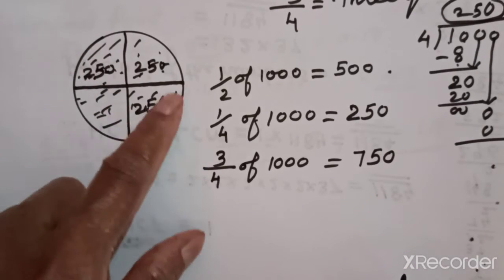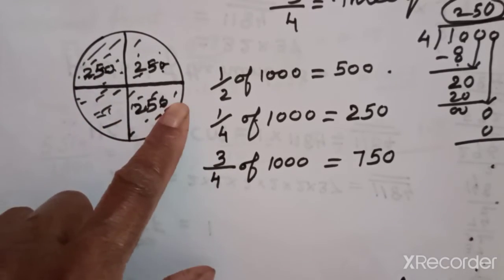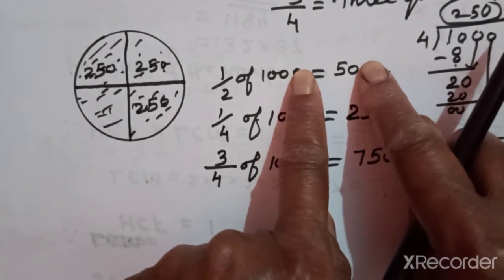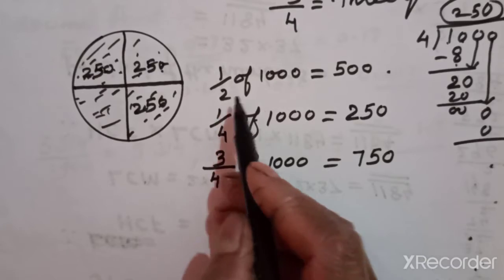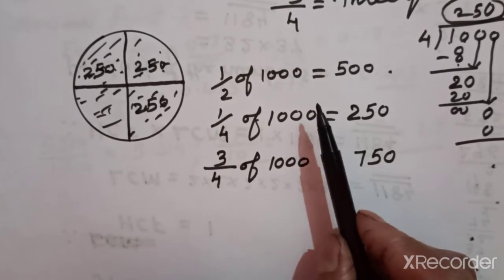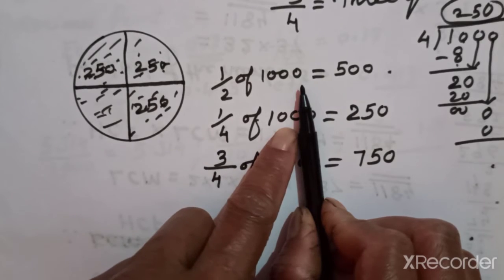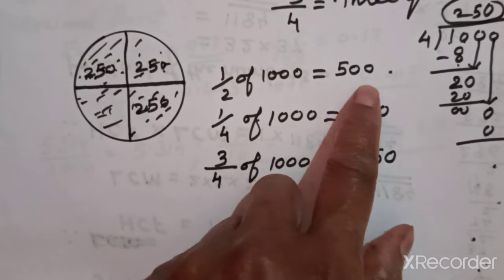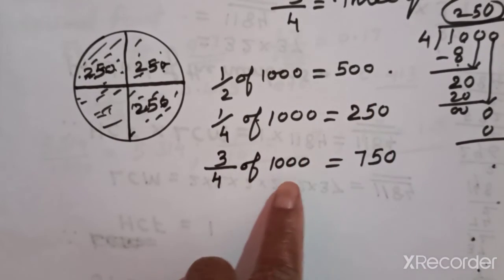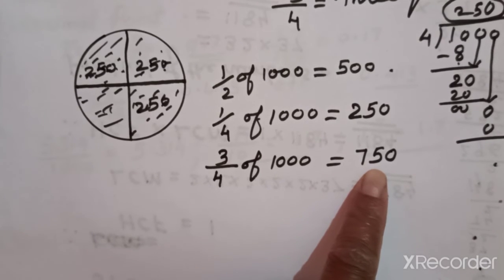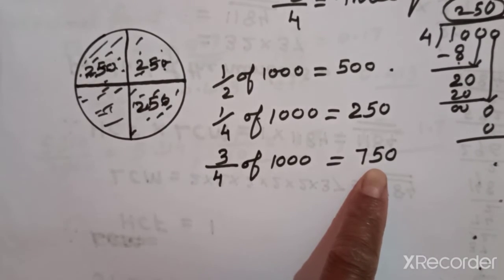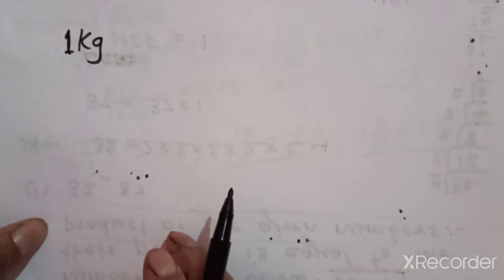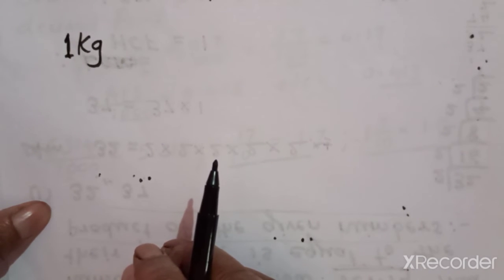In the same way, if there are 100 people: half of 100 is 50, one quarter of 100 is 25, and three quarters of 100 is 75. You have already studied these in previous classes. Now: one kilogram is a big unit of weight — one kilogram equals one thousand grams.